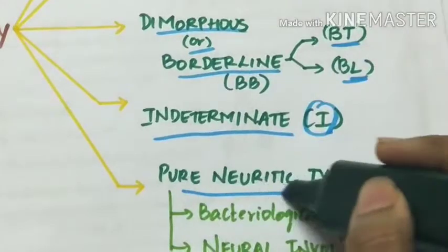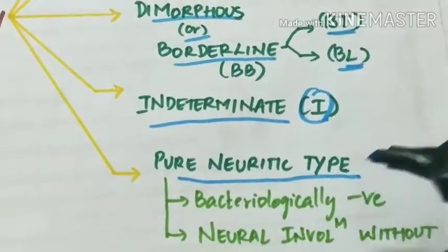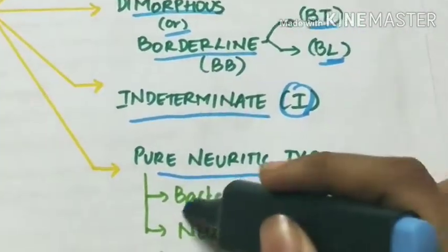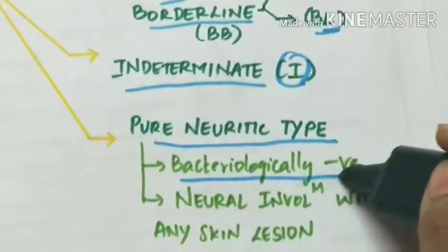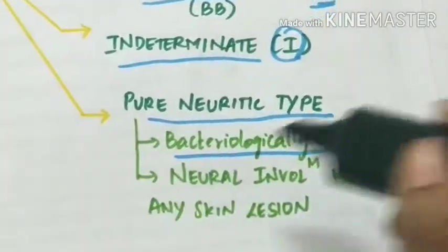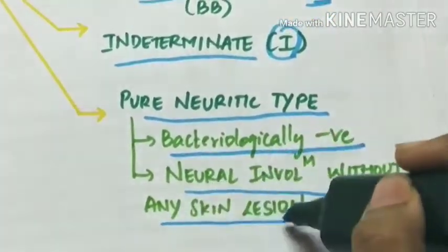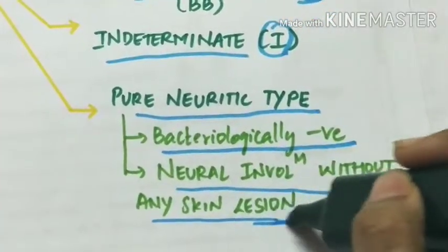The pure neuritic type is bacteriologically negative, and there is neural involvement without any skin lesion.